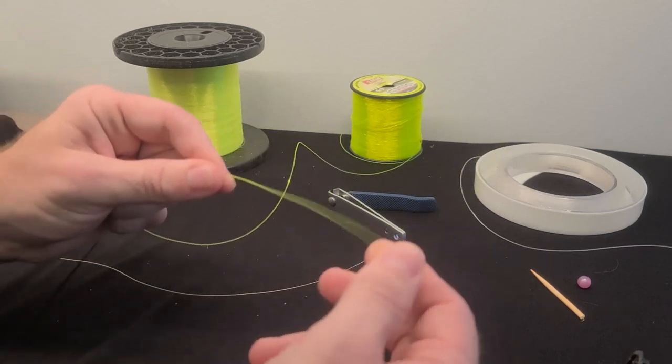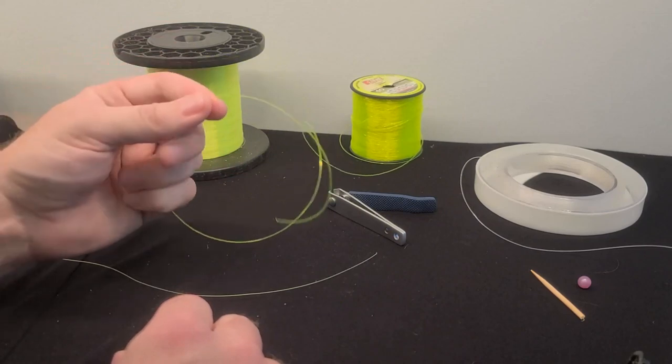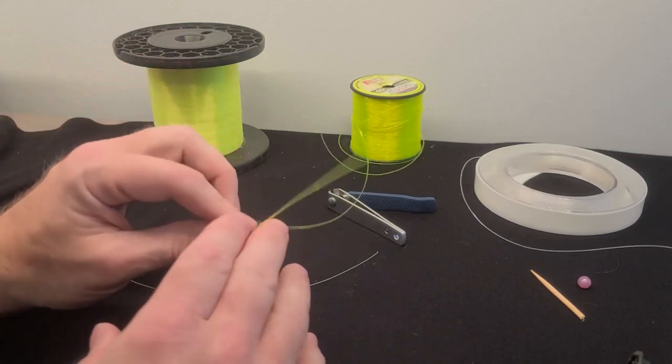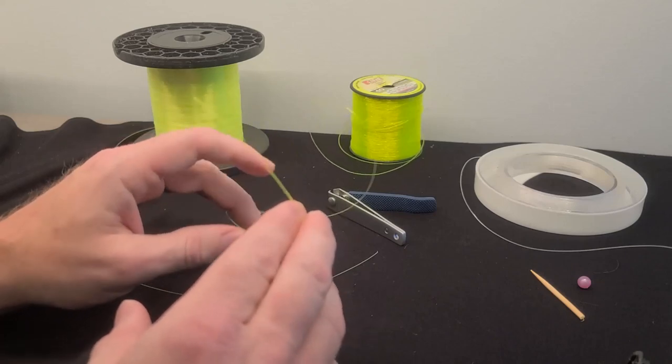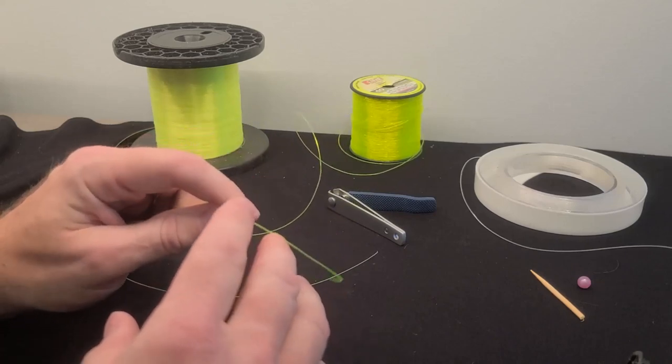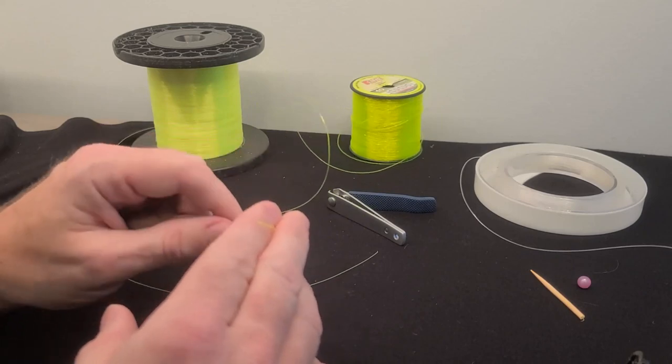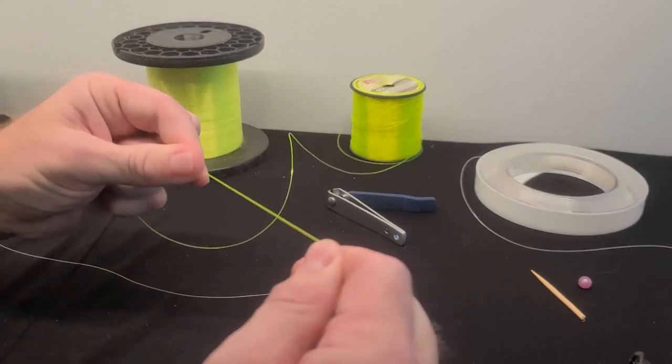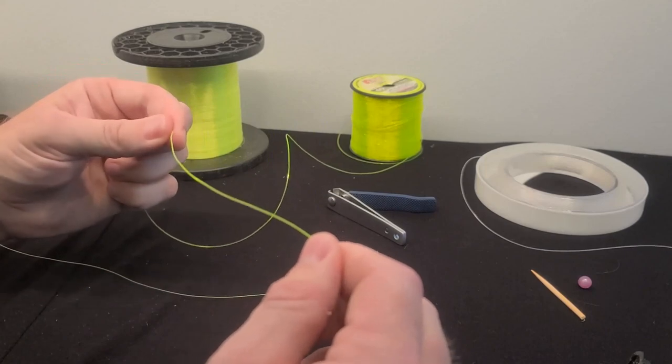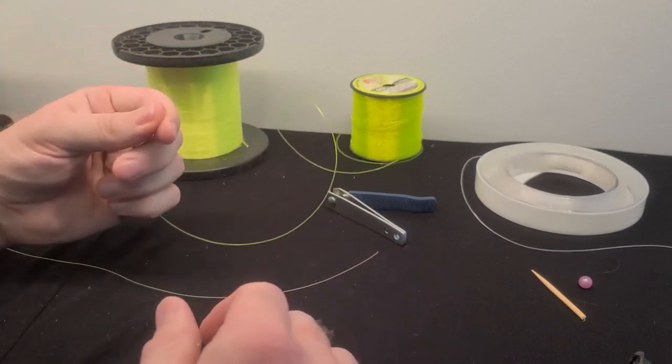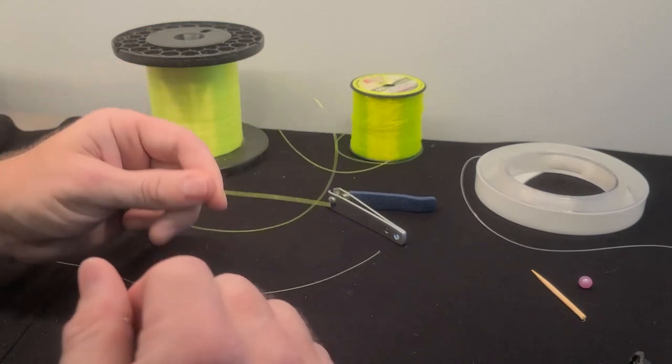Some people I have seen put braided line on their casting reel. I've tried it and I don't recommend it, only because braided line does not stretch at all. Mono line will always stretch, has a little bit of give to it. So that give sometimes prevents you from snapping the line if you put too much torque on it.